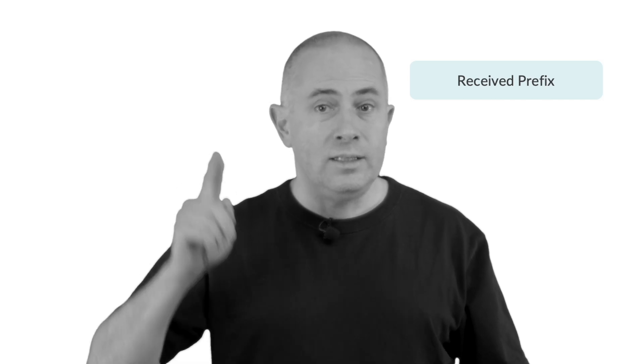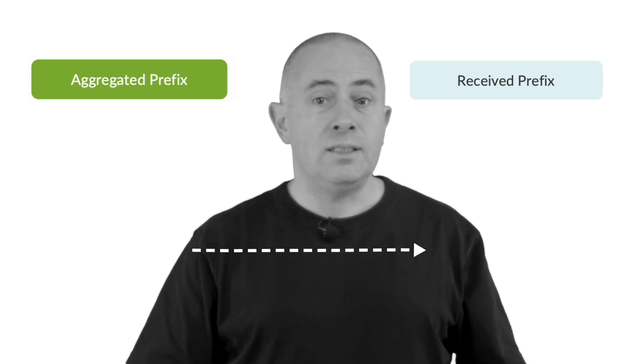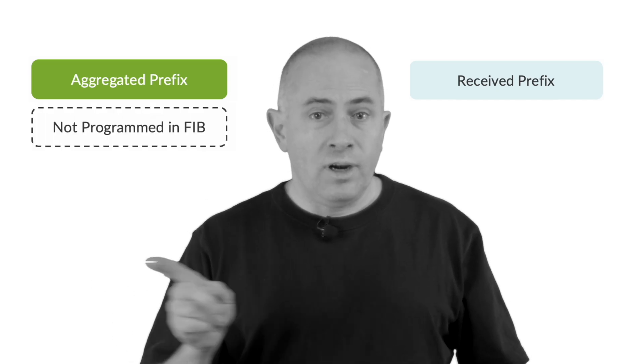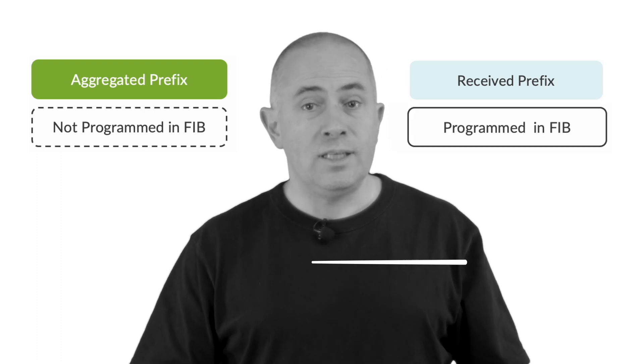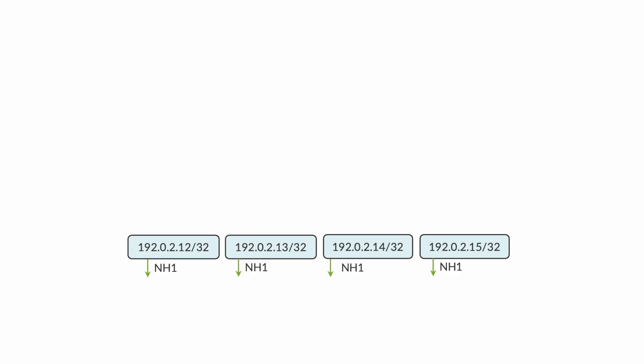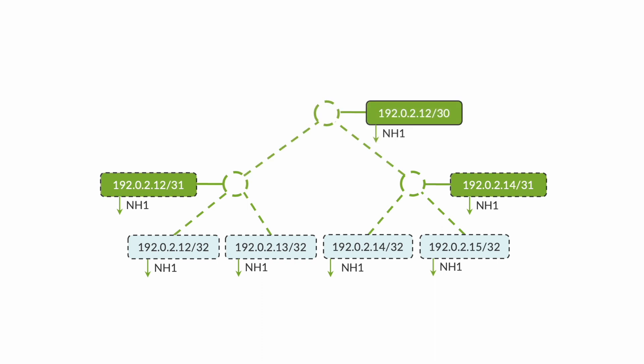In these diagrams, the blue color represents routes received from the RIB — whether direct, static, or advertised by a dynamic protocol. In green, we have the computed aggregated routes. A dotted line means it's not installed, and solid lines represent what is programmed in hardware. So we aggregated and only programmed 192.0.2.12/30.